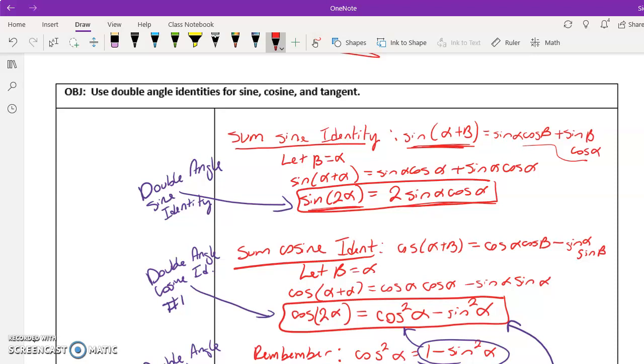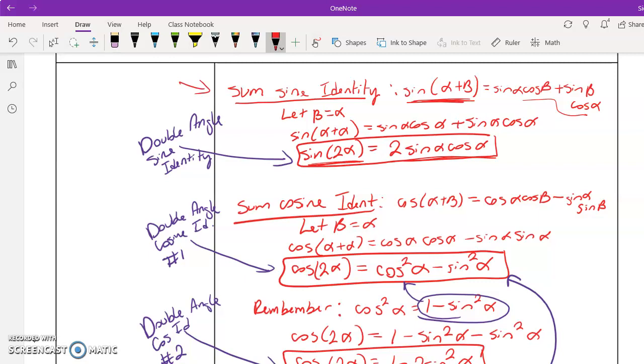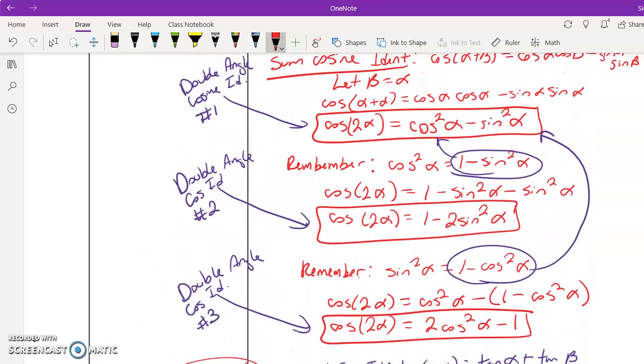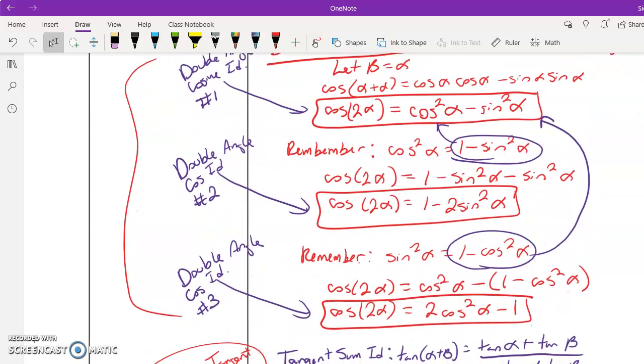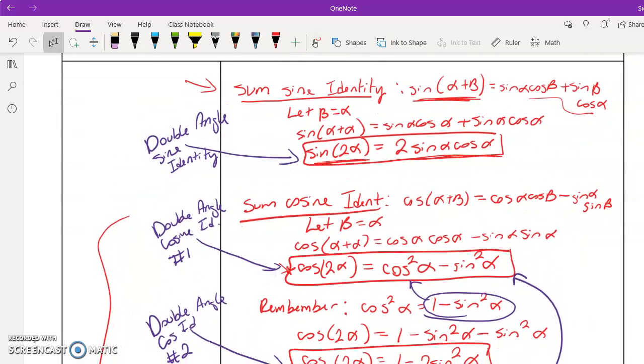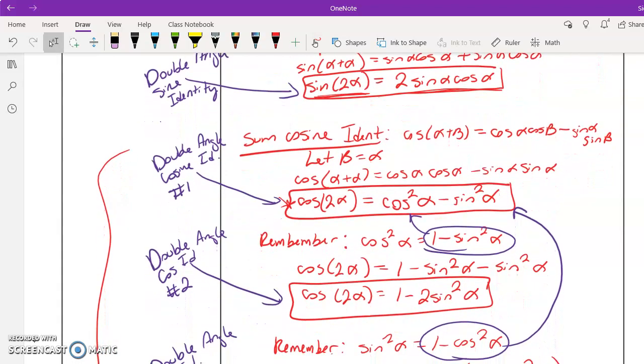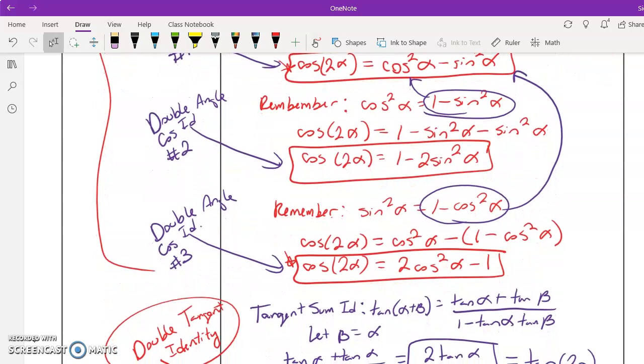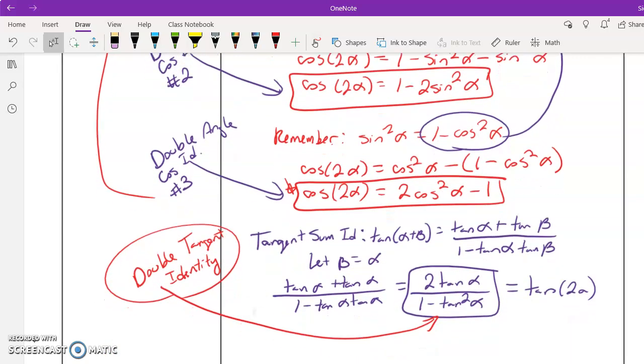Something else I want to point out is that there's one sine identity, one tangent identity, but there are three cosine identities. And it depends on what identity we want that will best serve our purposes. Sometimes we might want this one when other times we might want this one. So I want you to push pause and just copy down all this, and then we'll come back and put these to good use.